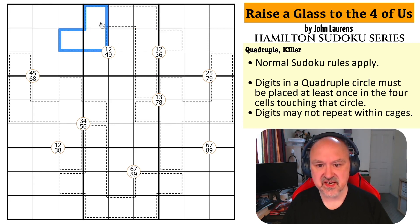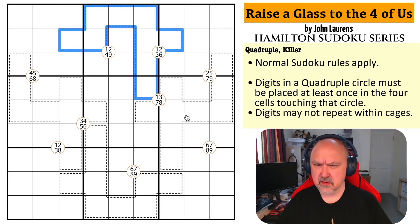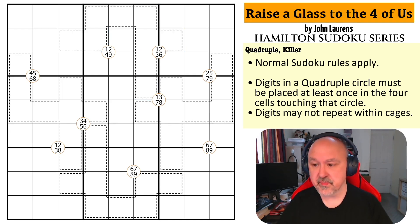We also have cages. And digits may not repeat within the cages. I think all of the cages are nine cells. Those are the rules of the puzzle. I'm going to restart the puzzle to restart my timer. Let's give this a shot.